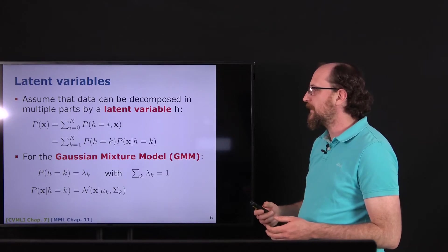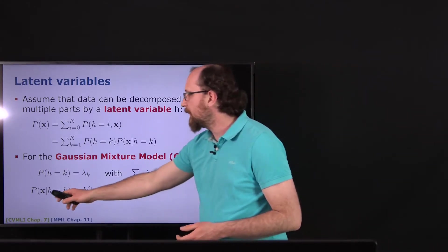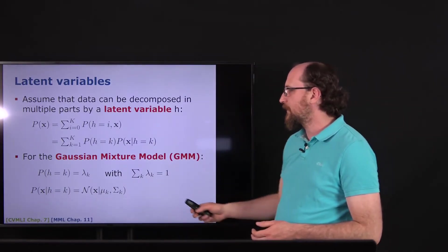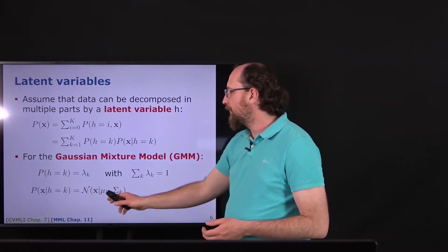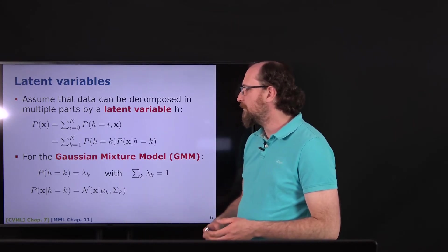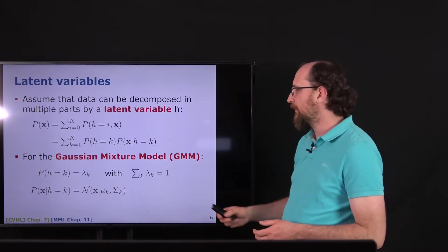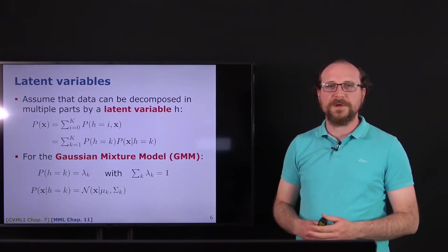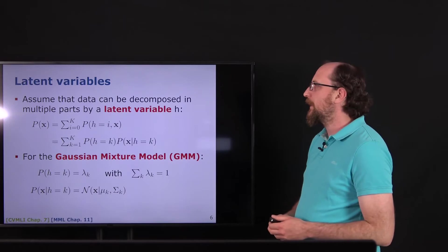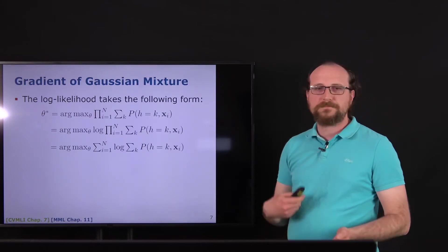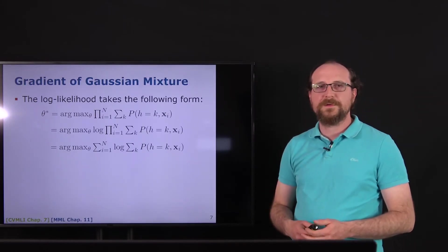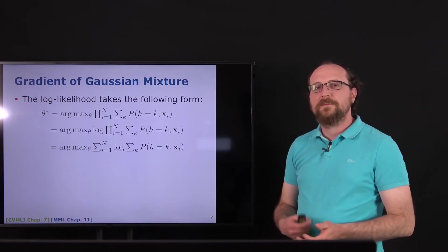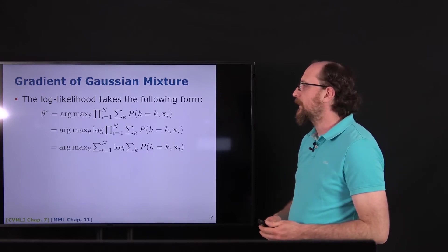The conditional distribution over the data given the hidden variable is then our normal distributions: the k-th normal distribution has mean mu_k and covariance sigma_k. This is the modeling assumption we make. As always when we want to optimize something like this, we look for the likelihood and derive the maximum likelihood estimate.